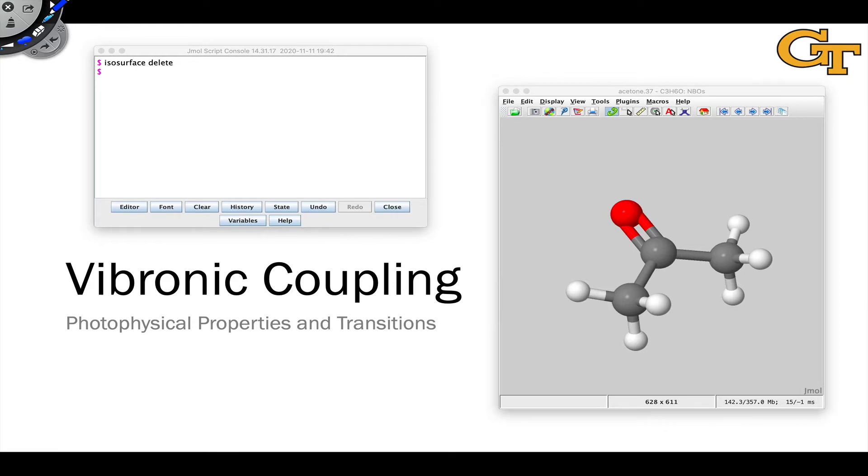The classic example of this is the Homo-Lumo transition in simple carbonyl compounds, which involves an N, a non-bonding orbital on oxygen, and the pi-star anti-bonding orbital between carbon and oxygen of the carbonyl group.